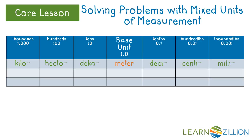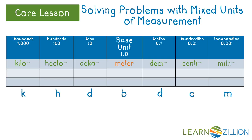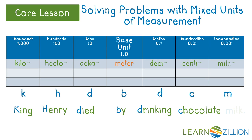Before we multiply to make our conversions, we have to figure out how many places to move the decimal point. We've been using our metric conversion chart to do that. This time, instead of using the whole chart, we are just going to use the first letter of each prefix. That gives us the letters K, H, D, B, D, C, M. Now, all we have to do is memorize the order of these letters. Many students use mnemonic devices to help them remember things. One such mnemonic device is to create a memorable phrase where the first letter of each word begins with the same letters you want to remember. A common mnemonic phrase for the metric conversion chart is: King Henry died by drinking chocolate milk.